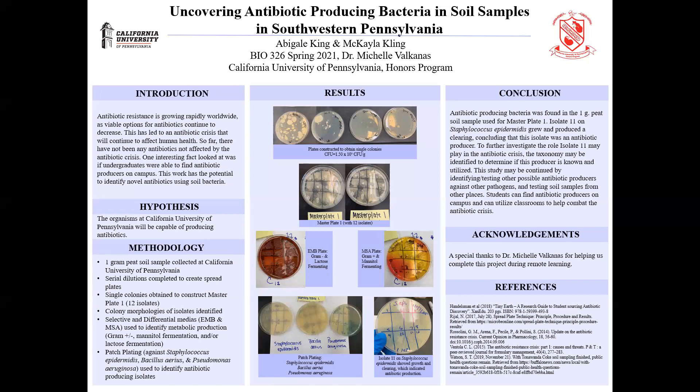However, that didn't give us an answer as to whether they were antibiotic producers, so we completed more tests. The next test was antibiotic production via patch plating, where you take a bacterial tester strain, place it onto the agar first, then place the isolates on top. This layering effect allows the isolates to grow and even produce clearings if they are antibiotic producers. We screened against three different organisms: Staphylococcus epidermidis, Bacillus aureus, and Pseudomonas aeruginosa, all shown in the bottom left picture.